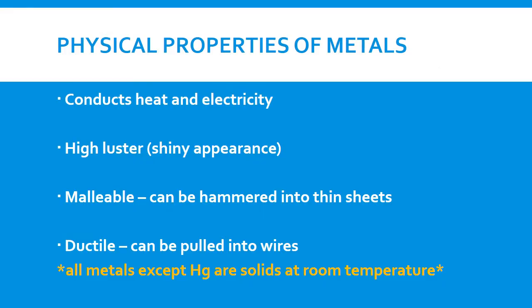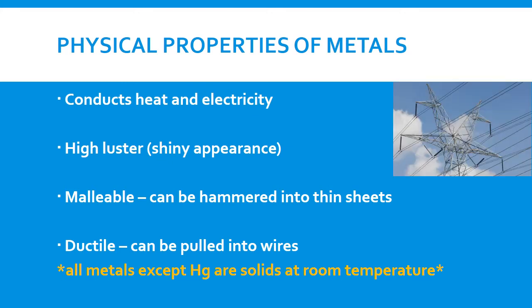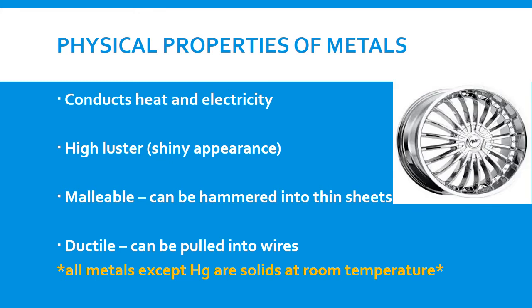So if you look at the physical properties of metals, metals are able to conduct heat and electricity. We use metals in these wires that we use to conduct electricity. If you've ever left a metal spoon in the pot while you're cooking and you go back to touch it five or so minutes later, it feels hot because it's a good conductor of heat and electricity. They have high luster. That means they have a shiny appearance. So think some jewelry, think about rims on cars and those kind of things.